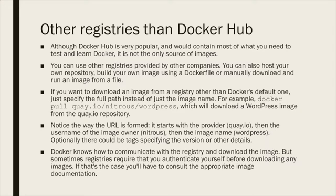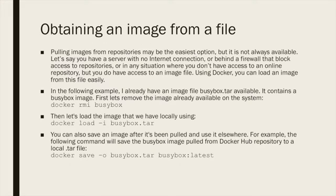Docker knows how to communicate with the registry and download the image. But sometimes registries require that you authenticate yourself before downloading any images — if that's the case, consult the appropriate image documentation. Another option is obtaining an image from a file. Pulling from repositories may be the easiest option, but it's not always available — for example, on a server with no internet connection or behind a firewall. If you happen to have an image file locally, you can use the docker load command to load it.